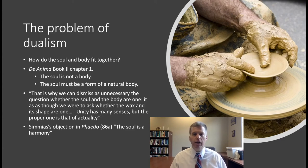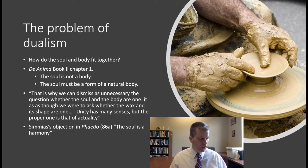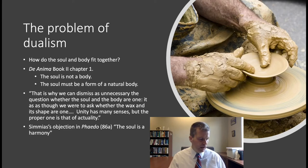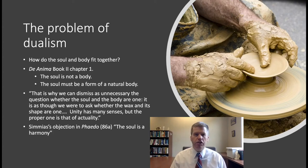In De Anima, book 2, chapter 1, Aristotle begins to apply his distinction between matter and form to the soul. He applies his account of matter and form to explain that the soul isn't a body — the soul is the form of a natural body. Aristotle continues later in the chapter to explain how his view answers the problem of dualism.